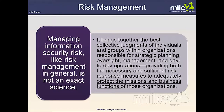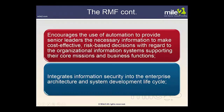When we think about strategic risk, that is considered from the perspective of risk to the overall organization. Your mission or business risk takes direction from the strategic risk, but then provides direction to risk at the tactical or information systems level. This encourages the use of automation to provide senior leaders the necessary information to make cost-effective risk management decisions with regard to the organization's information systems by supporting their core missions and business functions.